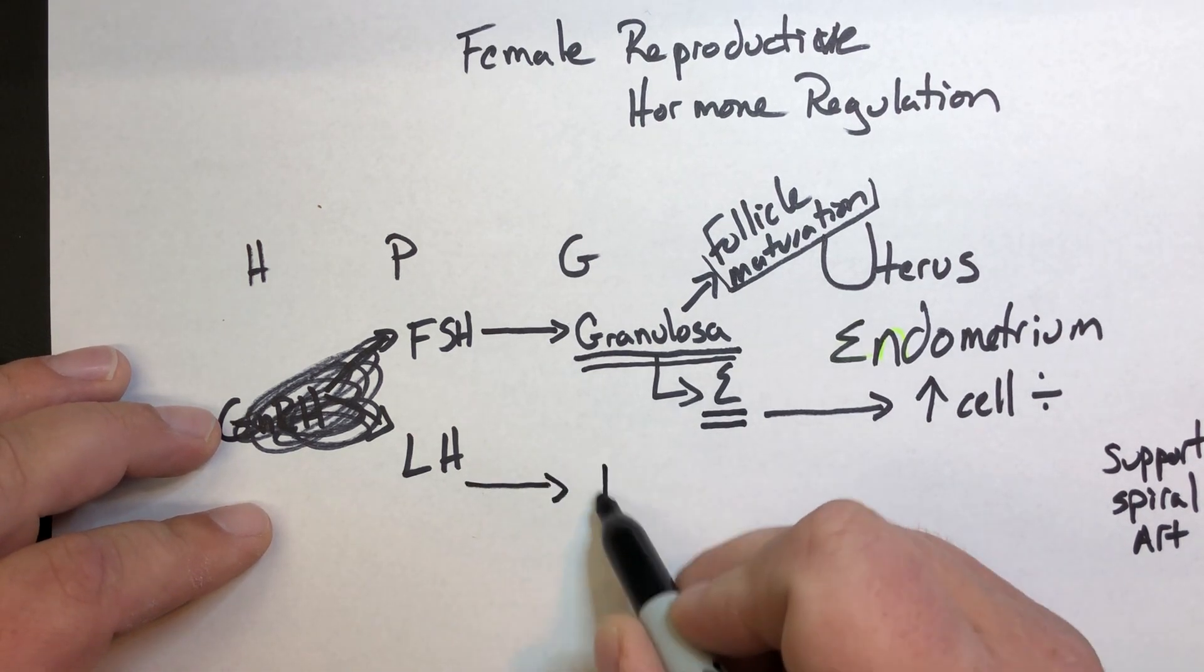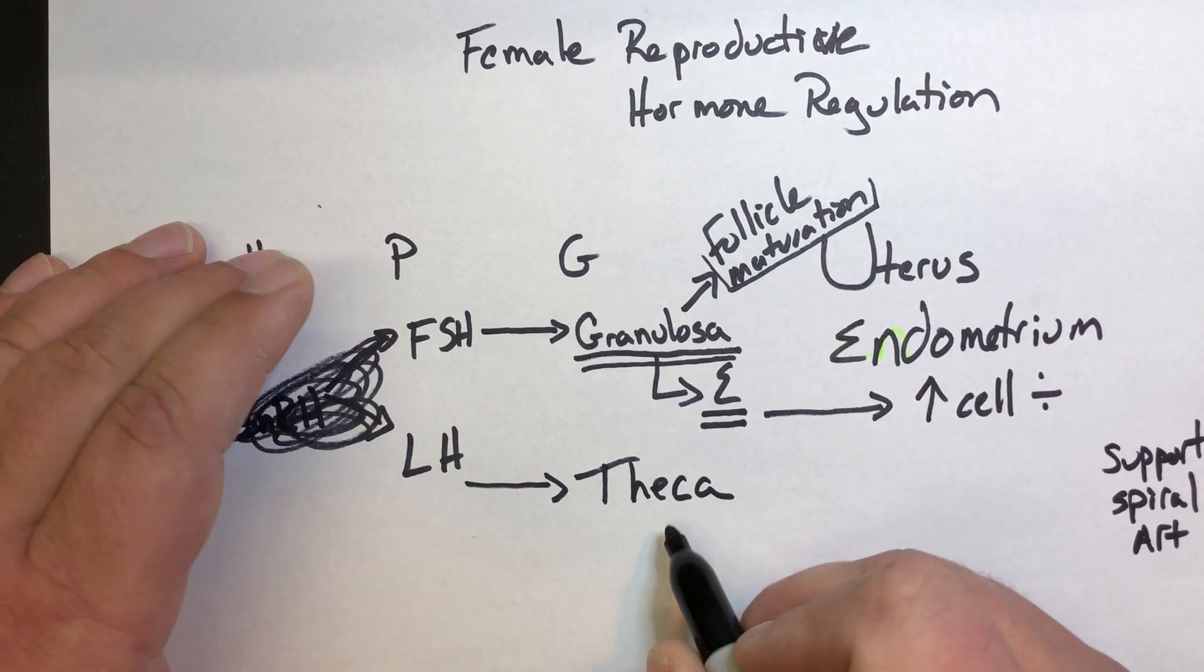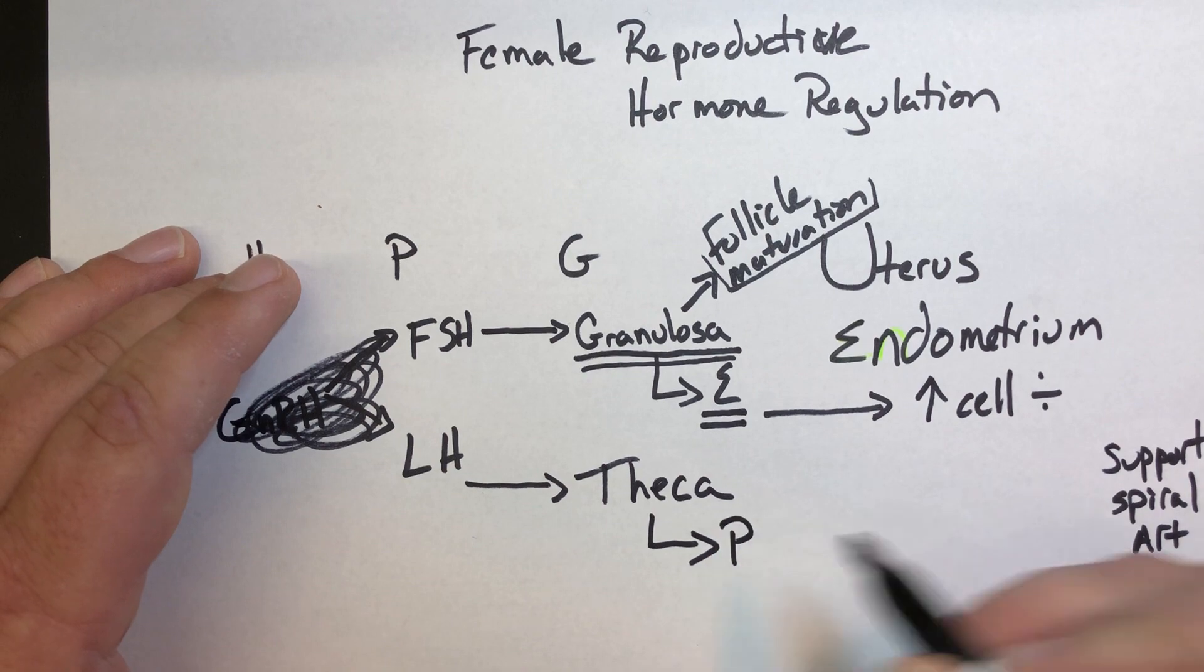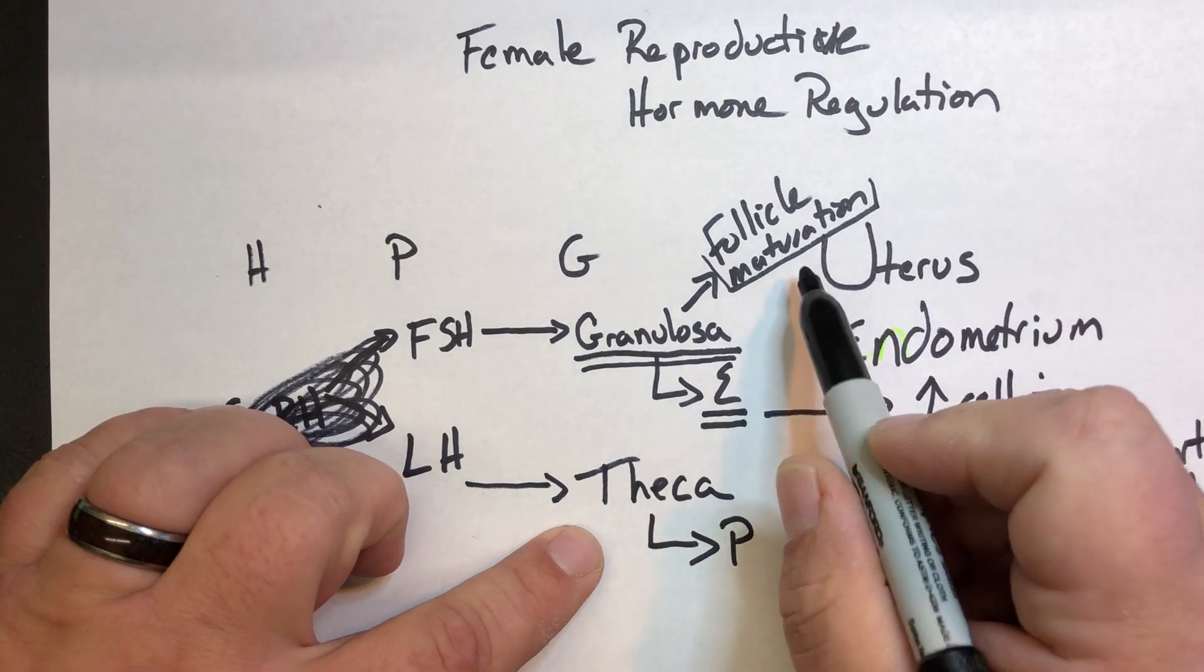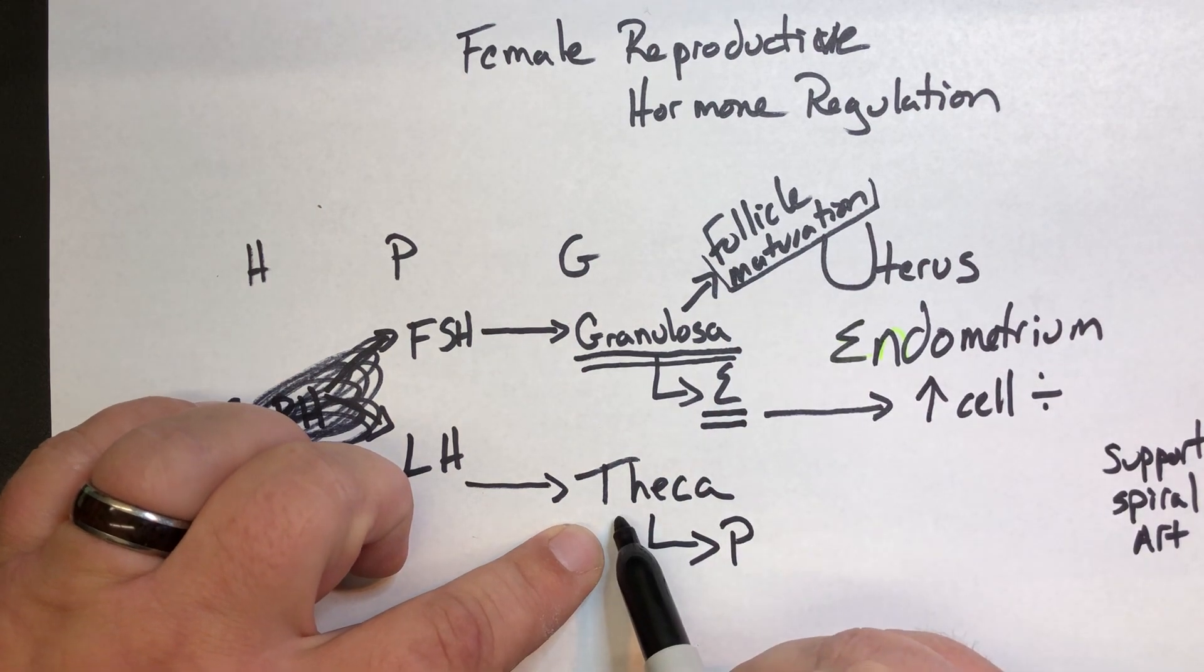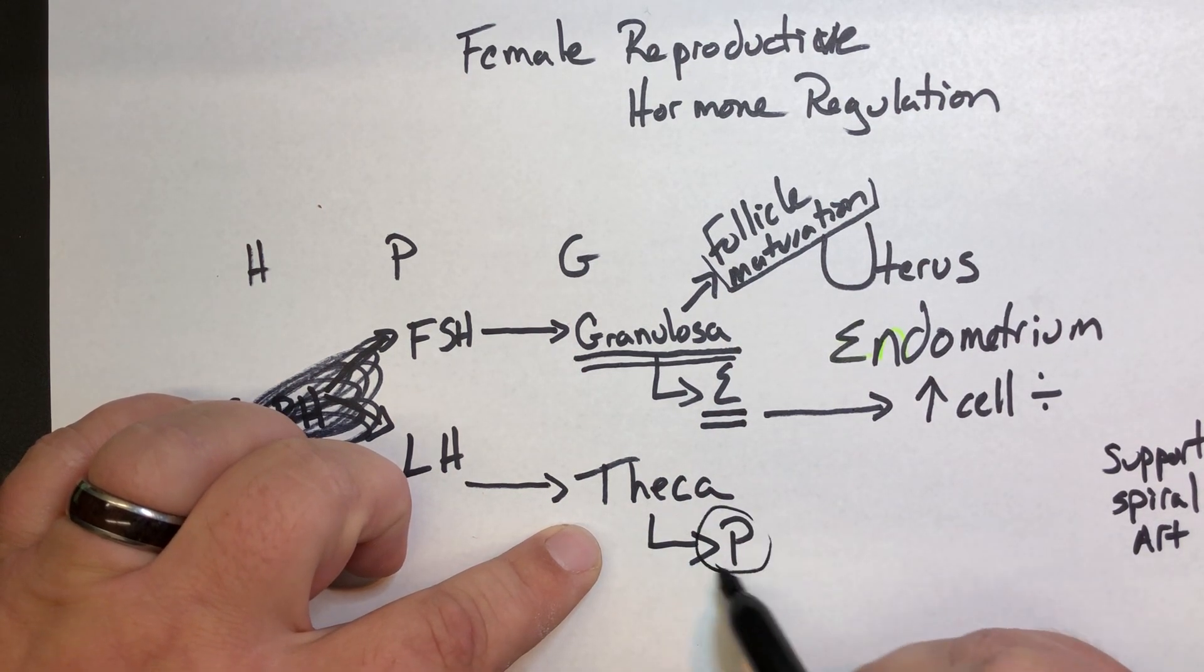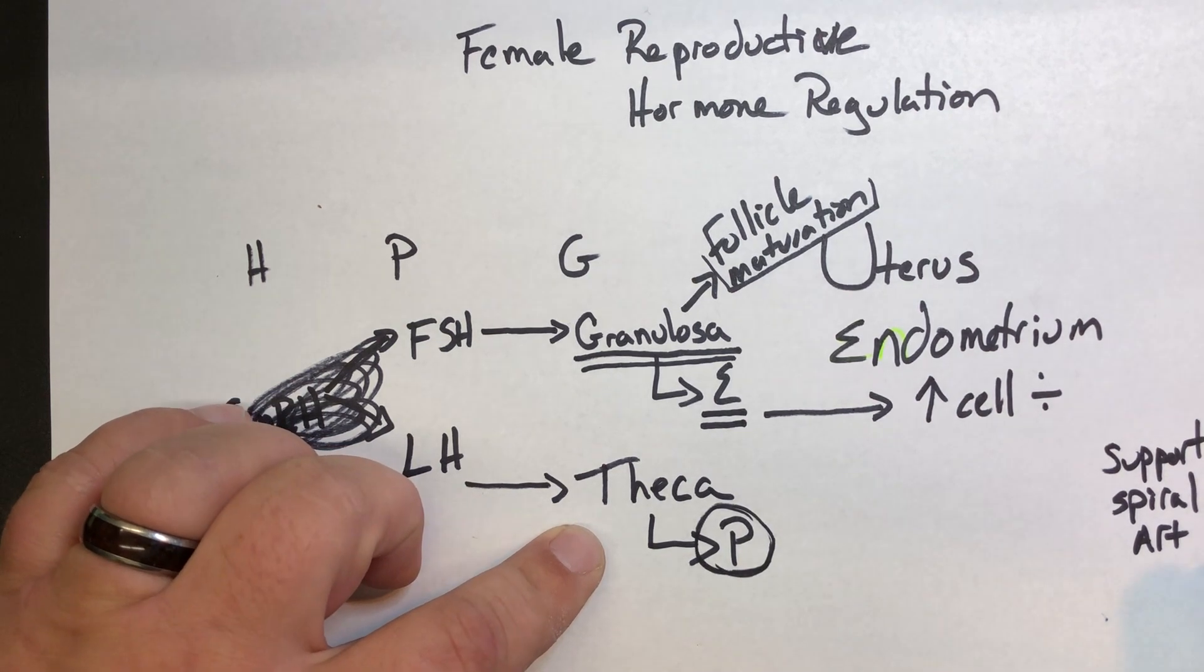LH targets the theca cells. And as a result, we see the theca cells produce progestin. As we talked about the maturing follicle, theca cells don't show up until the follicle is almost mature. So we don't see the effect of progestin until late in that initial pre-ovulatory phase.